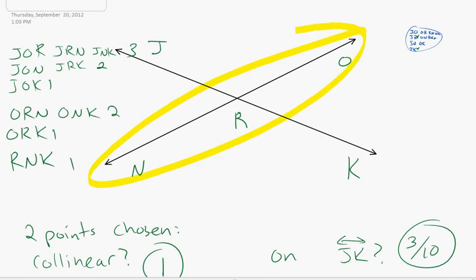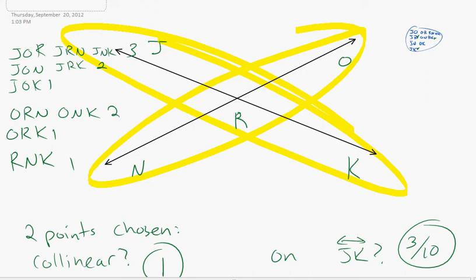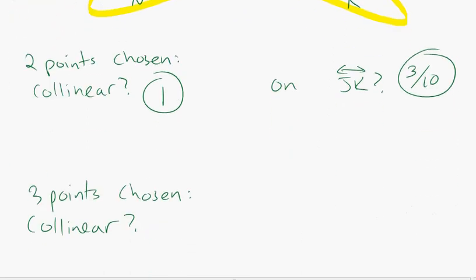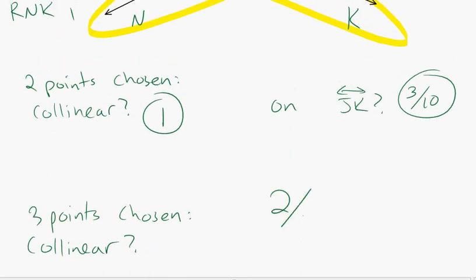This set and this set. Is there another set that's not collinear, that is collinear? I don't think so. So I think the answer is if you pick three points, chances are two-tenths, or one-fifth. Don't leave until you get the review sheet.